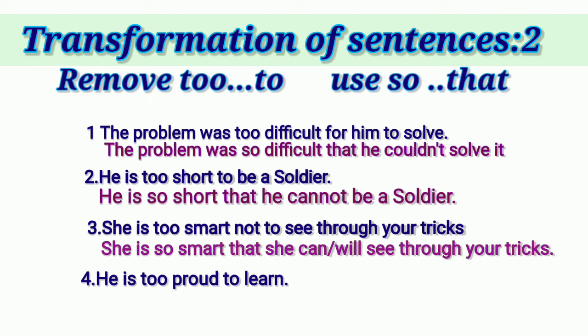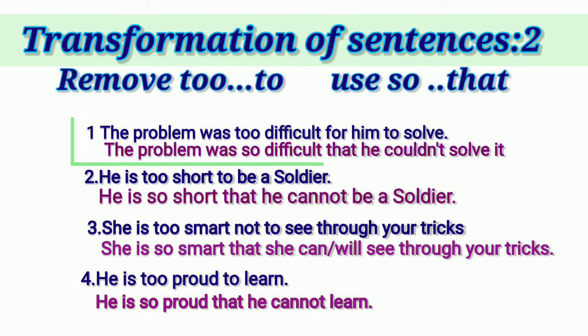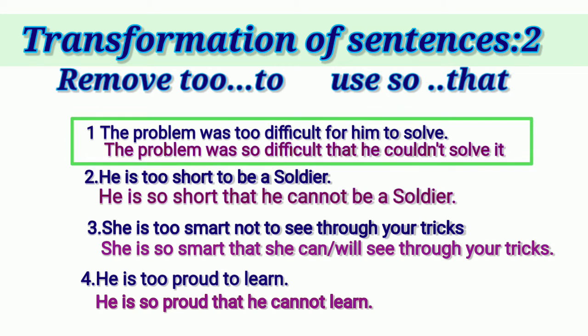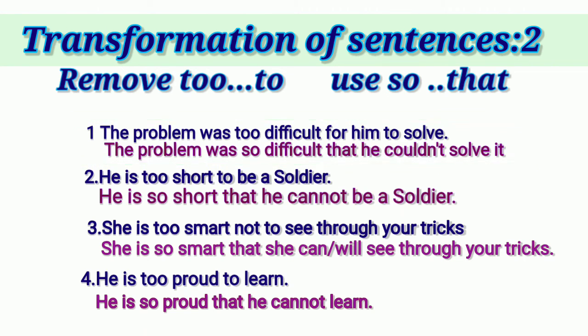Next example: 'He is too proud to learn.' Things to notice: 'is' indicates present tense, so we use 'cannot.' Subject is 'he,' so we repeat 'he' twice. The answer is: 'He is so proud that he cannot learn.' In the first sentence reviewed, TOO² was replaced with 'so'; 'for him' became 'he'; and 'could not' was used because the sentence was in past tense.